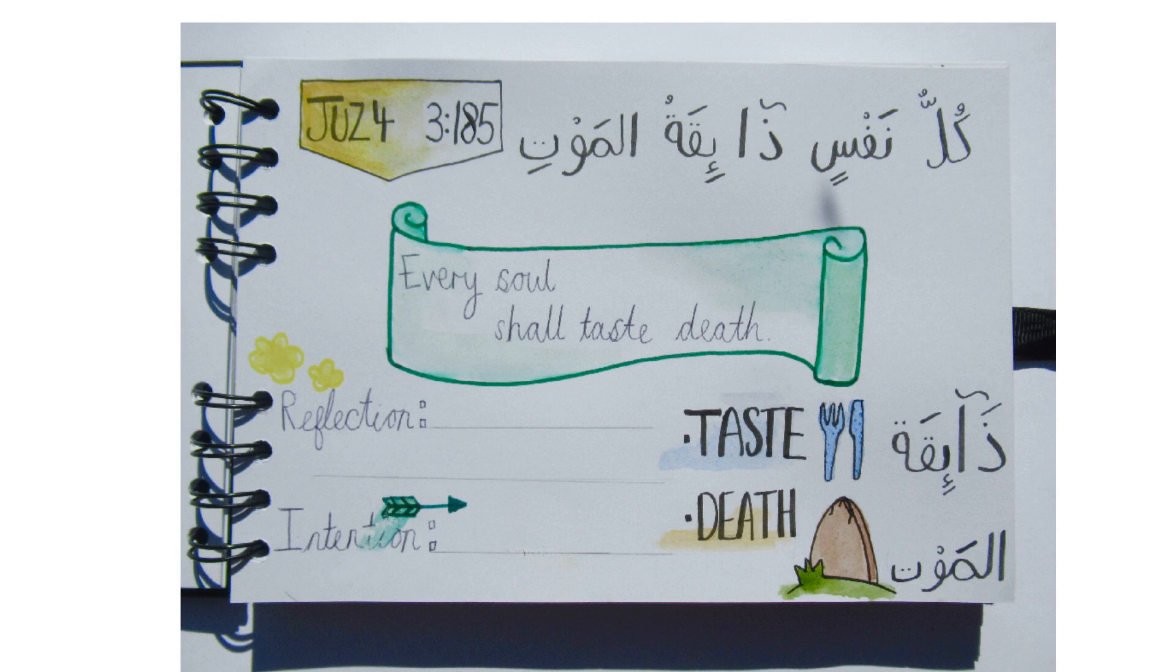Lay yours out however you like. I record the juz number as a title at the top, and I like to write the verse in both the Arabic and the English. Down here I've got our key words to help me remember the verse. The most important part, I think, is a space for you to write your own reflection on the verse, and what it means to you.